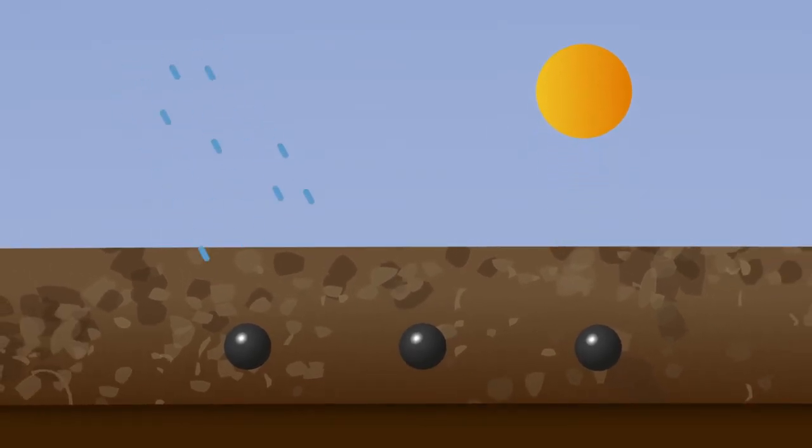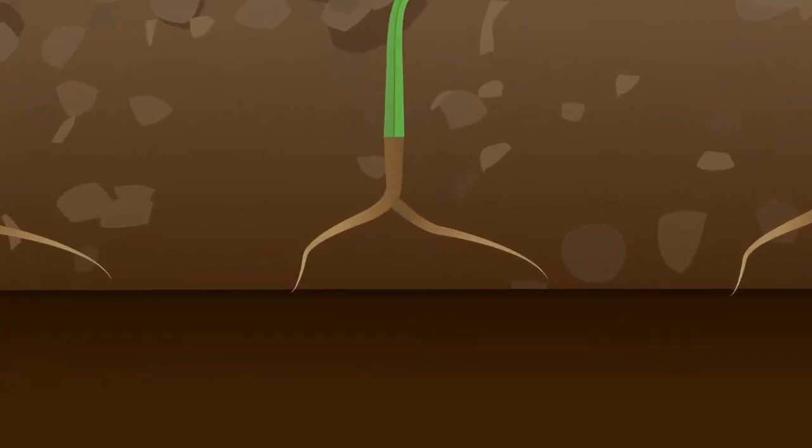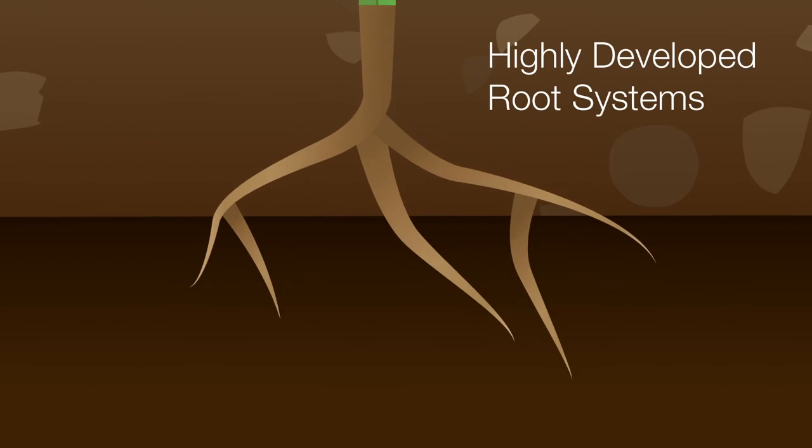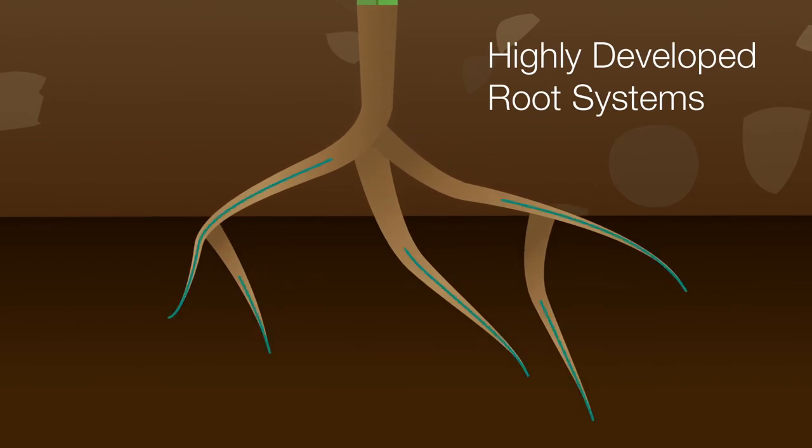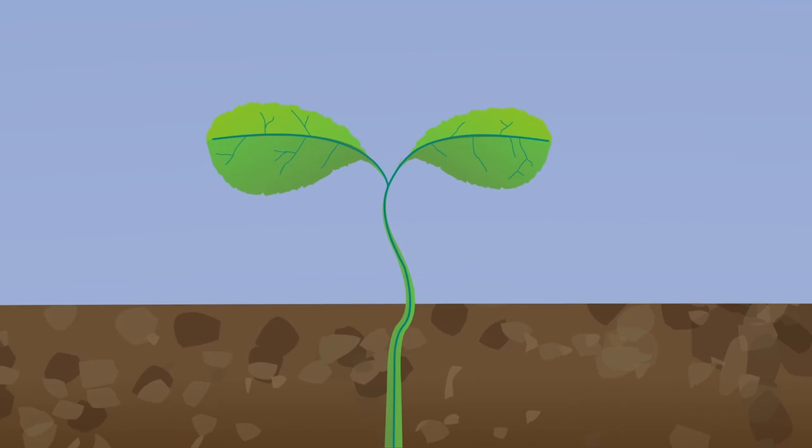Fast autumn development is key to establishing a successful crop. InVigor hybrids have highly developed root systems that optimize water and nutrient uptake and improve standing power.